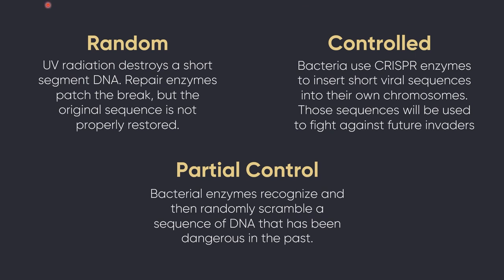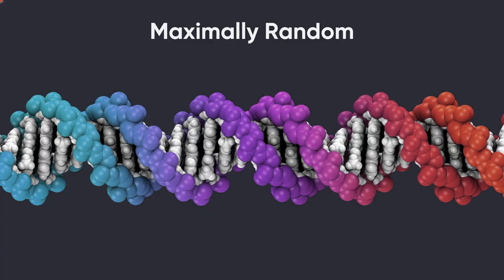Another way to think of this is that random mutations are things that happen because the world is chaotic. The environment that cells live in is a chaotic environment, and the internal environment of the cell where the DNA lives is also chaotic. S*** happens. The controlled and partially controlled mutations are the result of evolved systems — evolved enzymes that can actively induce mutations. But even still, are these random mutations maximally random? Even when nothing has evolved to help control them, are they maximally random? What would maximally random look like?